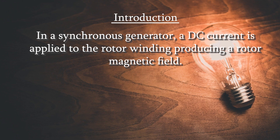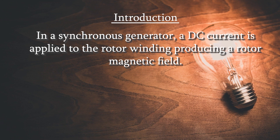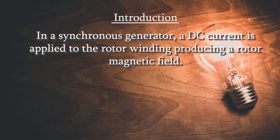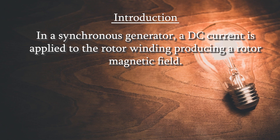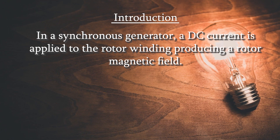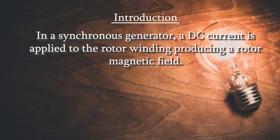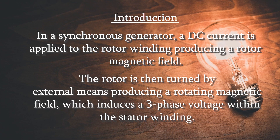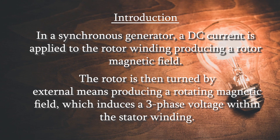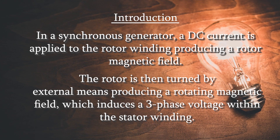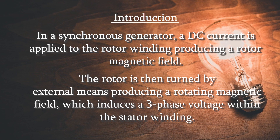In a synchronous generator, a DC current is applied to the rotor winding producing a rotor magnetic field. In every machine there are two windings, one on the stator and one on the rotor. This winding on the rotor is then turned by external means, producing a rotating magnetic field which induces a three phase voltage within the stator winding.